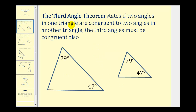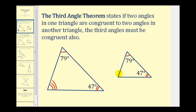Let's first talk about the third angle theorem. This theorem tells us that if two angles in a triangle are congruent to two angles in another triangle, then the third angles must be congruent also. So looking at this diagram, if this angle is congruent to this angle, and this angle here is congruent to this angle here, because they're equal in measure, then these third angles must also be congruent.